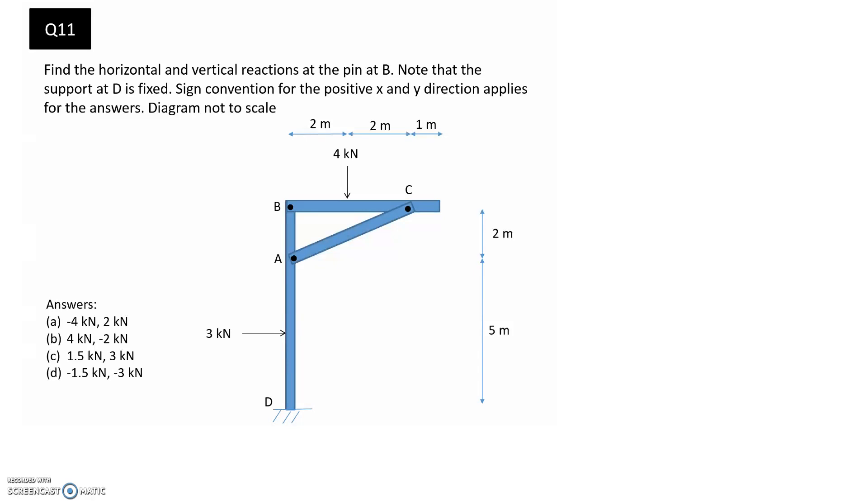This question asks us to find the horizontal and vertical reactions at the pin at B. Note that the support at D is fixed. The sign convention for the positive x and y direction applies for the answers and the diagram is not to scale.